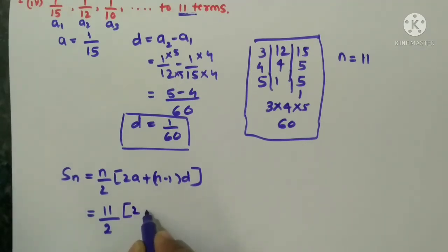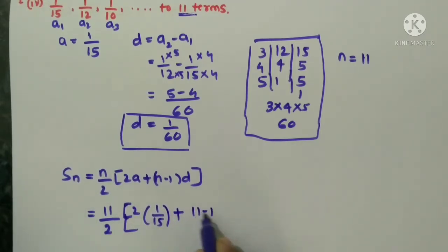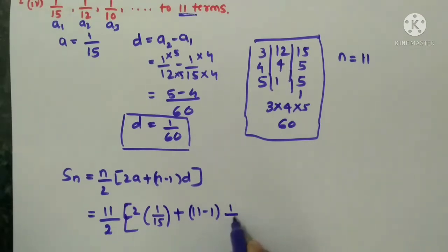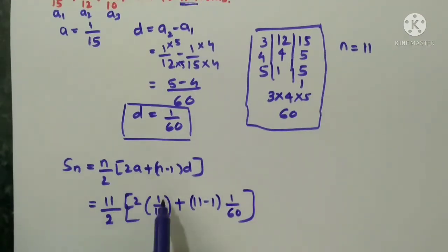We will see how I will simplify. 2 into a value what we have here, 1 by 15, so I will write like this 1 by 15. So 2a, 2a plus n minus 1, 11 minus 1, d value we got 1 by 60. See 2a value is 1 by 15, n minus 1, 11 minus 1 into d value is 1 by 60.